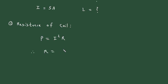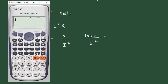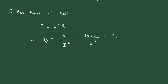Therefore, R is equal to P divided by I squared. Power is 1000W, so 1000 divided by 5 squared, which gives us 40. Since it is resistance, its unit will be Ohm. So R is equal to 40 Ohm. Now we have the value of resistance R.